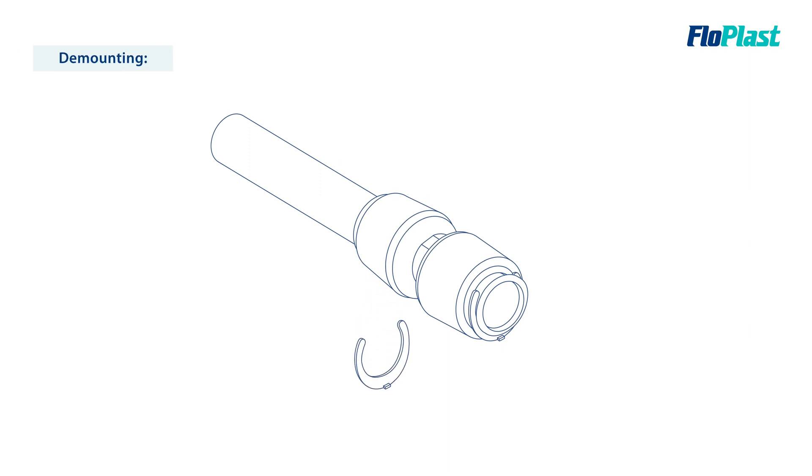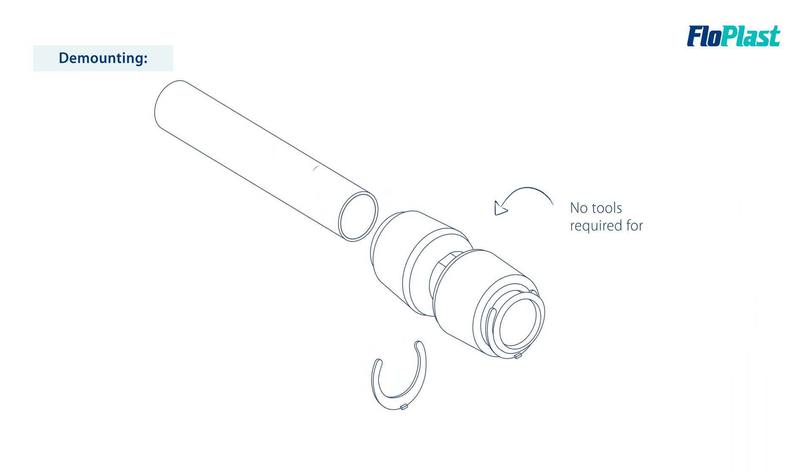When it comes to demounting the Flowfit Plus system, you first need to remove the collet clip and loosen the cap on the fitting. Pull the pipe back slightly, then push the collet face towards the body of the fitting. No tools should be required to dismantle Flowfit Plus fittings.